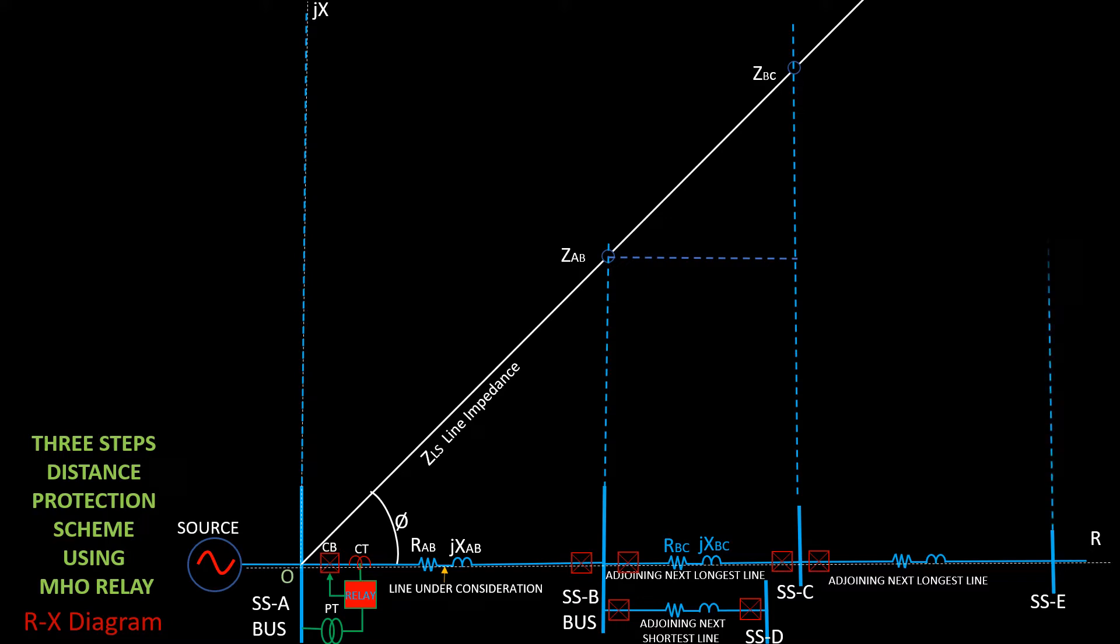And Zce is the calculated impedance of line between substation C and substation E. Zbd, the calculated impedance of the line between substation B and D.